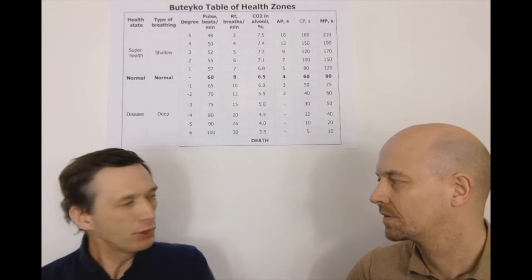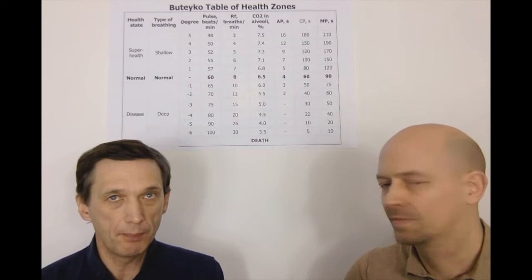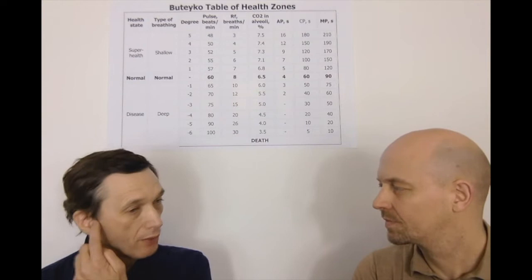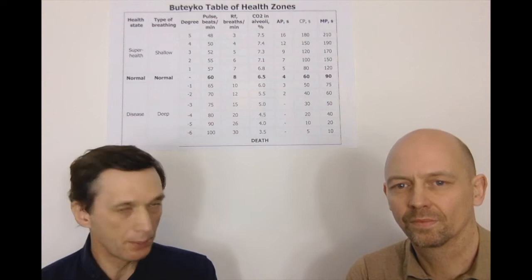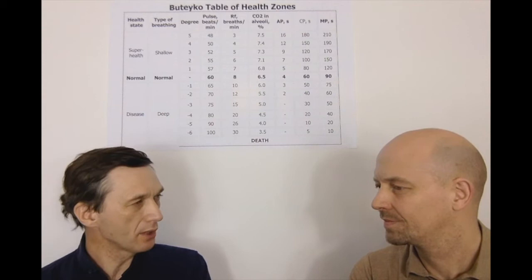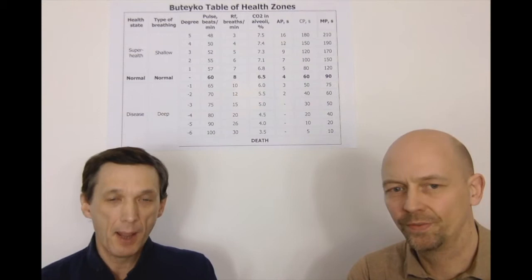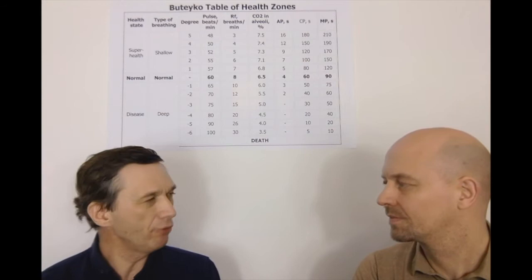Buteyko had three different author certificates. One was for reduced breathing exercises, another for the connection between the CP control pause test and CO2 levels — how to measure the CP and how to use it to find carbon dioxide levels and oxygen levels in the body cells. And there is one more discovery, which I believe is probably the most important one, because there are so many photos which can be found in Russian sources.